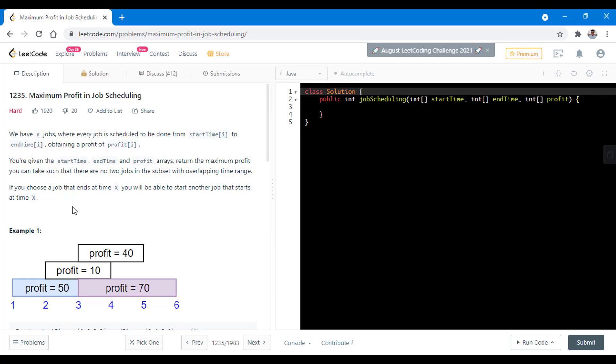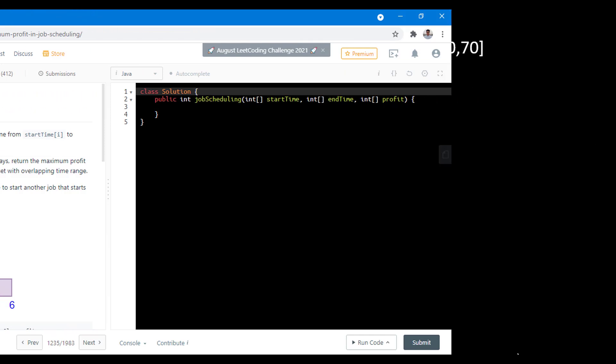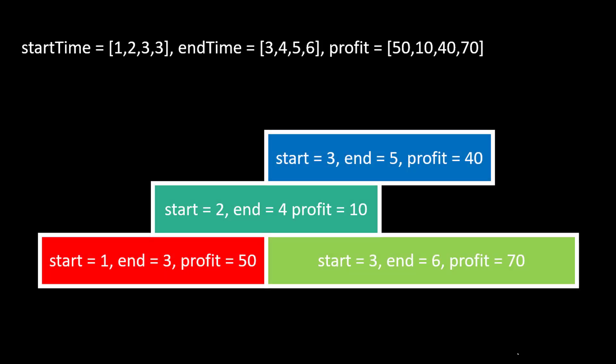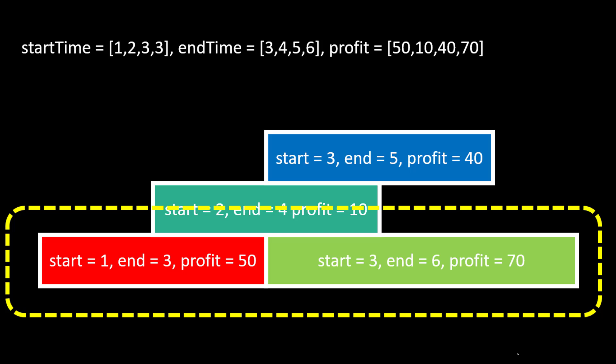Now let's see what the question is all about and what approaches we can use to solve this problem. This is the start, end, and profit arrays given in the first example, and this is how it looks diagrammatically. We have two time values in this problem — the start time and the end time — and we can use either of the two to find the result.